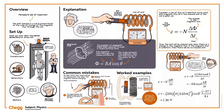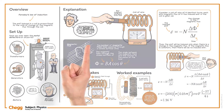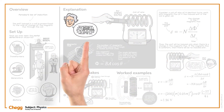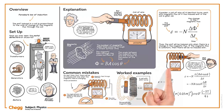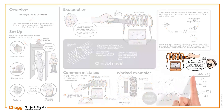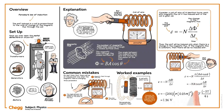Summing up, we learned about Faraday's law, which states that the induced EMF in a coil is directly proportional to the change in the magnetic flux through the coil. The direction of the current induced in the coil is such that it opposes the change in the magnetic flux.